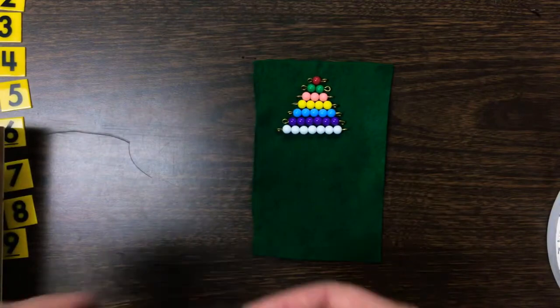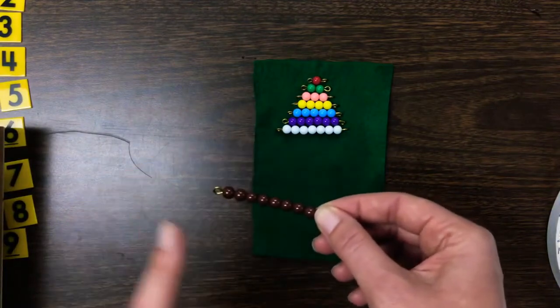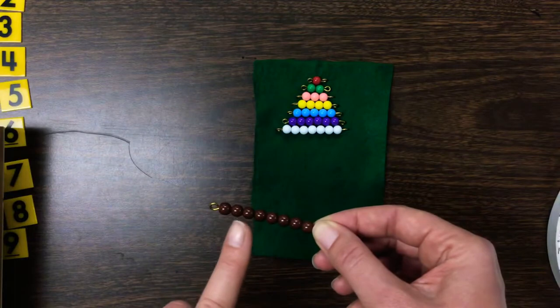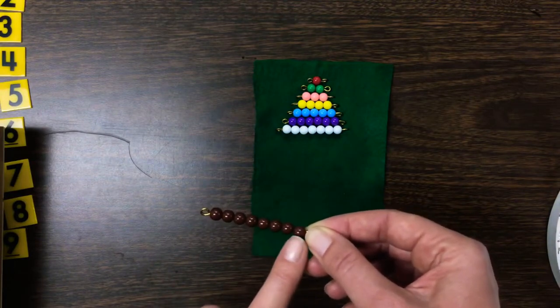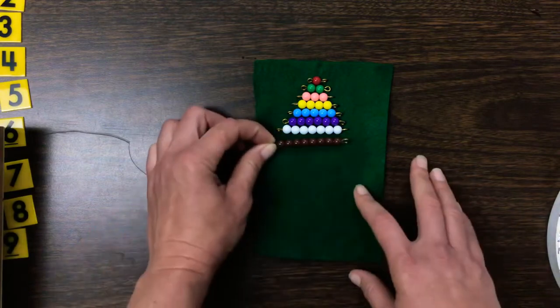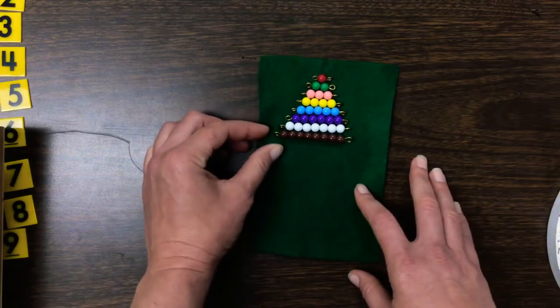Next one. You ready to count? Go. Yeah, that's the eight's bead. That goes right underneath the seven's just like that.